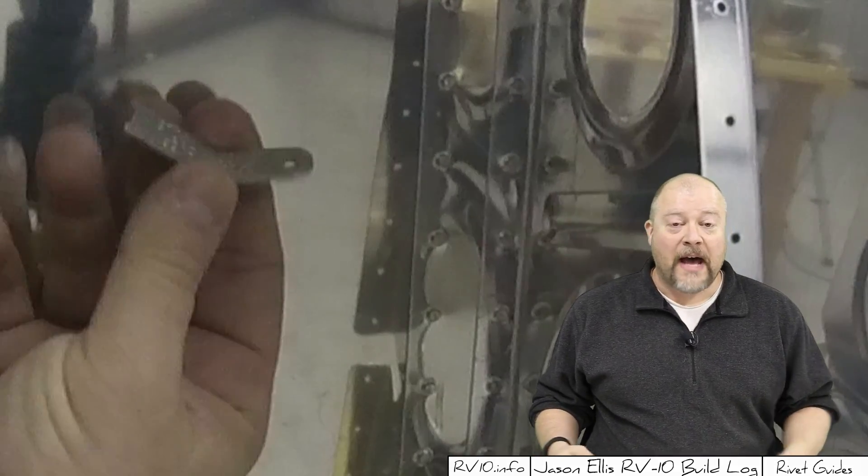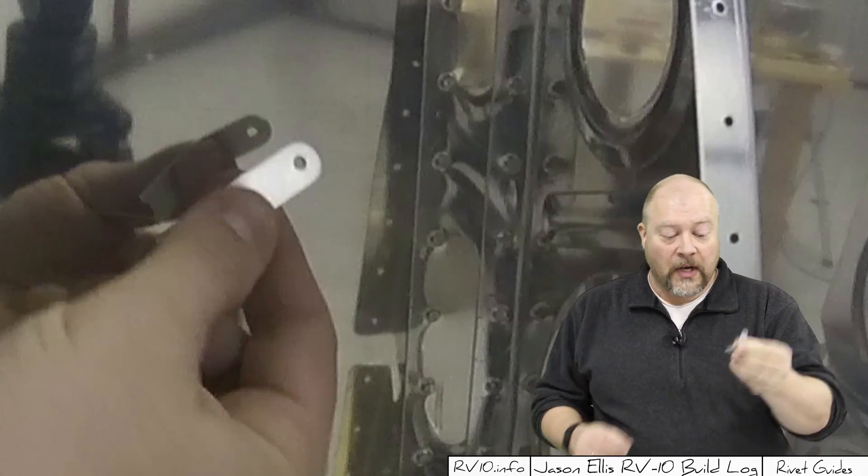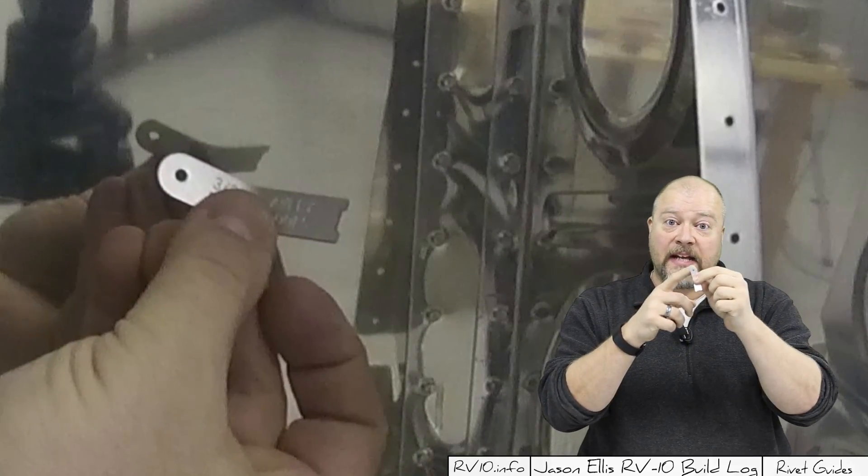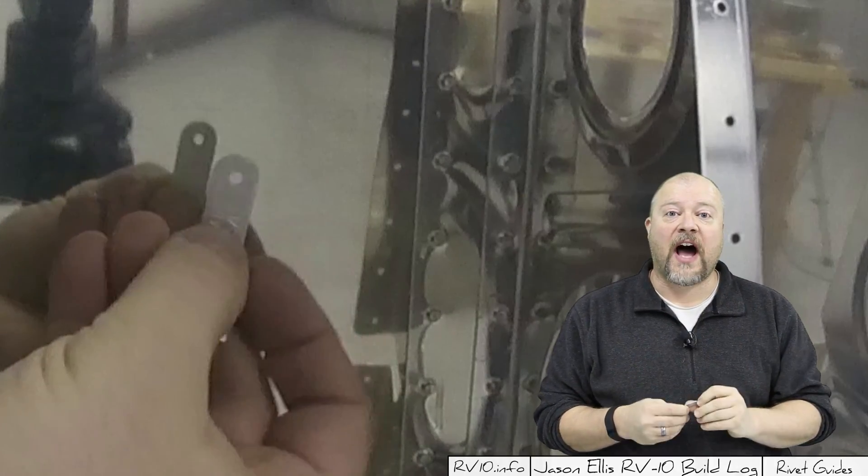Hey guys, real quick video on how to use these little bent rivet gauges. So these little rivet gauges are quite handy. They are two tools in one: one side has a hole on it, the other side has a notch.